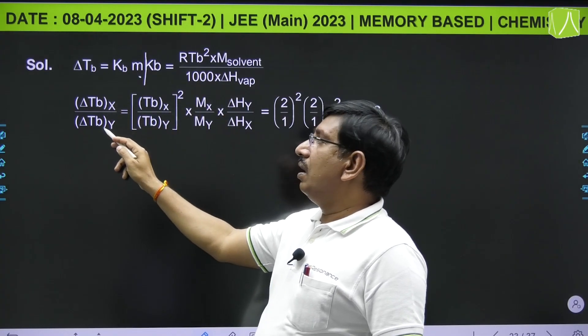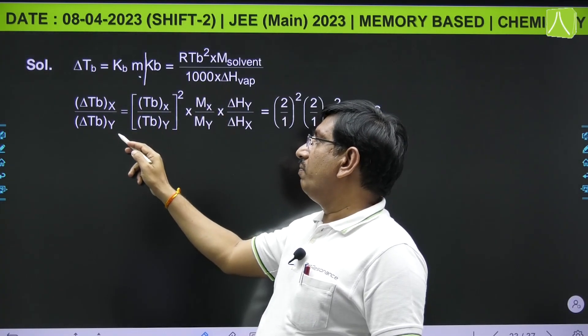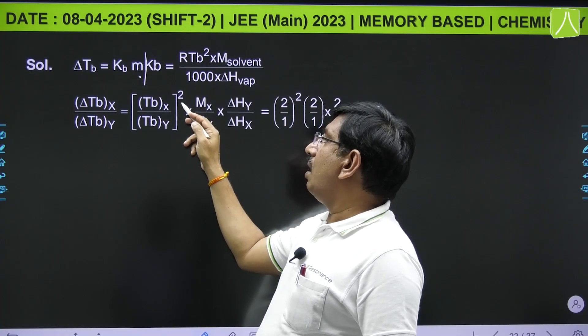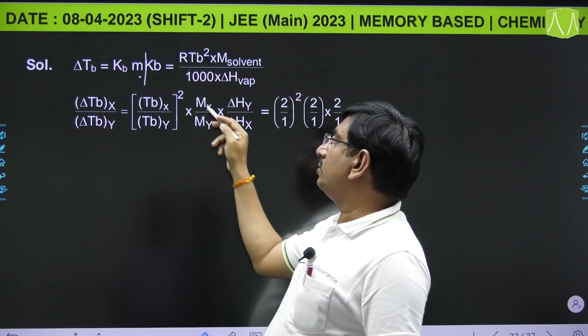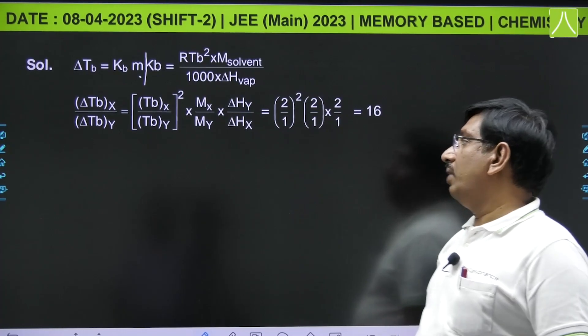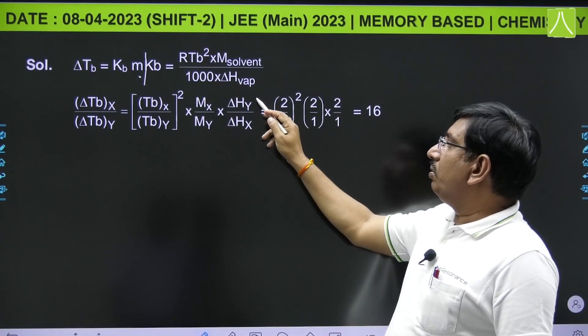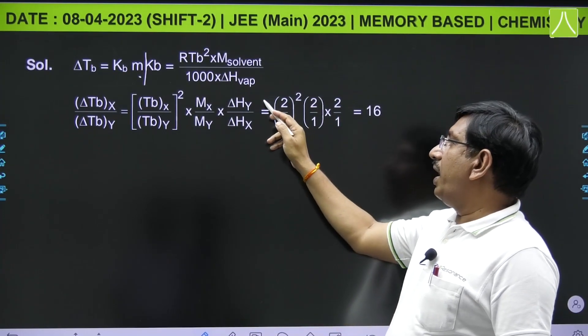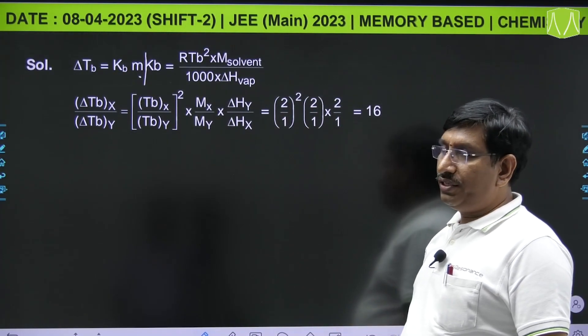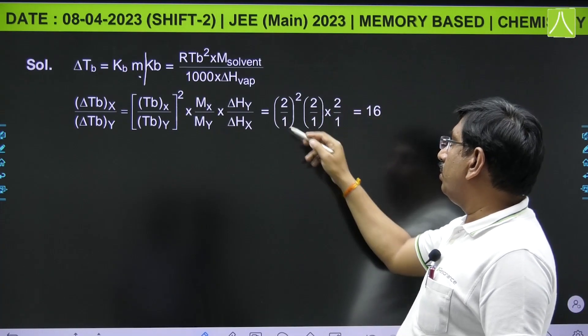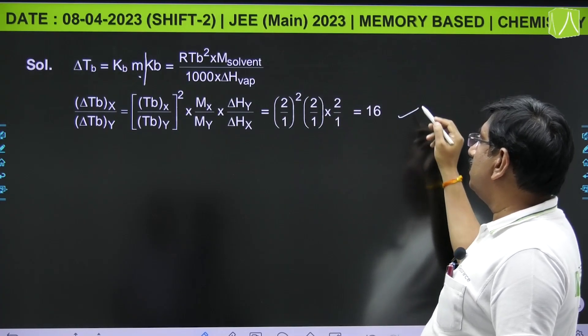So from this, ΔTb of X by ΔTb of Y equals (Tb of X / Tb of Y)² × (molar mass of solvent X / molar mass of solvent Y) × (enthalpy of vaporization of Y / enthalpy of vaporization of X). By substituting this, you will get 16.